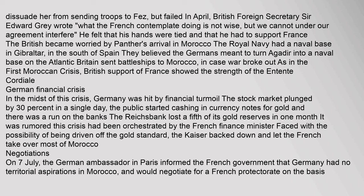The British became worried by the Panther's arrival in Morocco. The Royal Navy had a naval base in Gibraltar, in the south of Spain. They believed the Germans meant to turn Agadir into a naval base on the Atlantic. Britain sent battleships to Morocco in case war broke out, as in the First Moroccan Crisis. British support of France showed the strength of the Entente Cordiale.